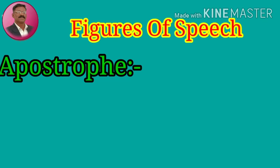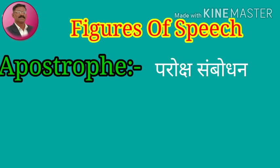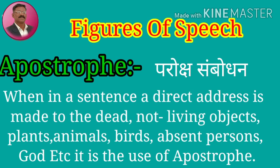Third one is apostrophe, means parokshasambodhan. When in a sentence a direct address is made to the dead or non-living objects, plants, animals, birds, absent persons, God, etc., it is the use of apostrophe. Jadhi karin nirji vastu, vanaspati, pakshi, manavetar prani, anupasthit vyakti la, kiuma devala udeeshun vicharum andlele astil, tethe apostrophe, manjej parokshasambodhan, haa alankar alela asto.